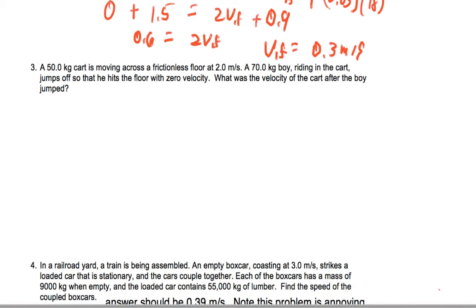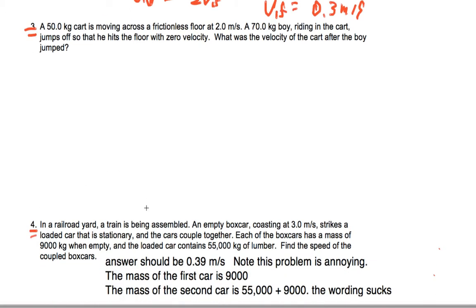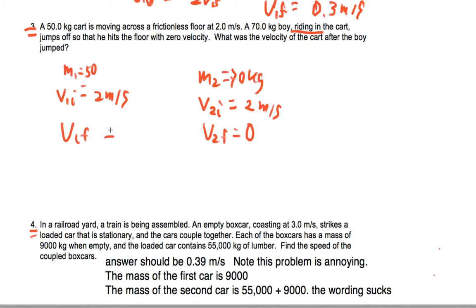Now, questions three and four, I'd actually rather not work out video solutions for those. What I'd like to challenge you to do is to work these out on your own. And what I'm going to ask you to do is to actually email me your answer that you get. I will give you a little setup for number three. I'm going to tell you that M1 is going to be 50 kilograms, I'll tell you that V1 initial is 2 meters per second. And since the boy is riding the cart, we're going to say M2 is 70 kilograms, and the initial speed of the boy riding the cart is also 2 meters per second. Since the kid hits the floor at a speed of 0, what we're missing is V1 final. So I've given you a little bit of a hint to set up for that.